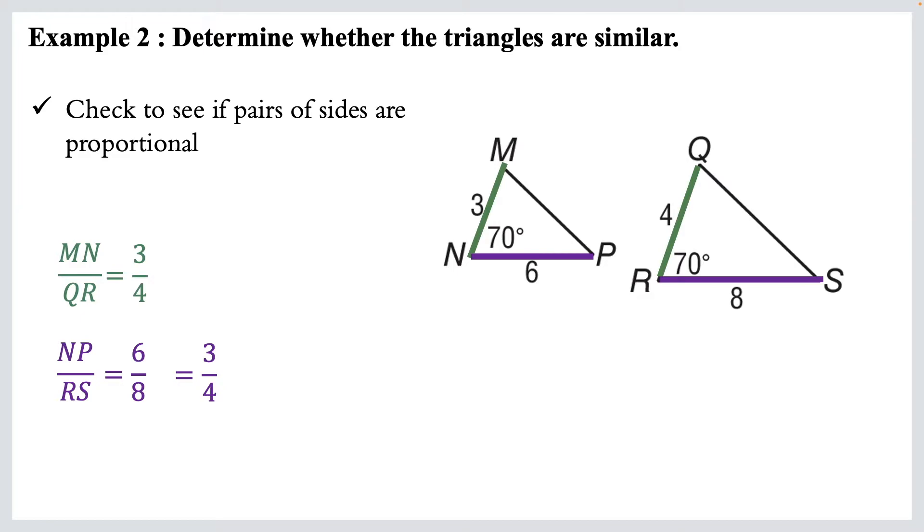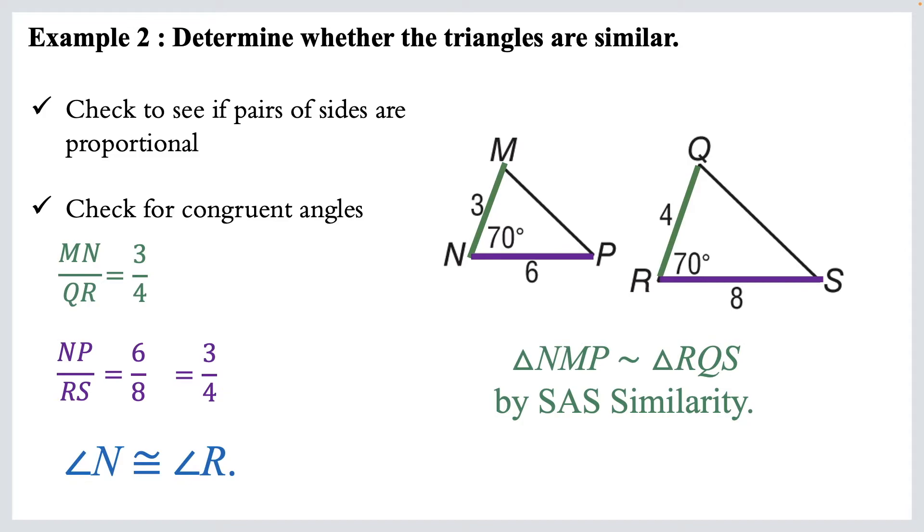So those are all the sides we know. We've got two sets of proportional sides. Now let's look at the angle included, or the angle between them. Alright, so angle N and angle R, they're congruent. They're both 70 degrees. So we do indeed have similar triangles. We've got triangle NMP is similar to triangle RQS because of the side-angle-side similarity. A lot like congruent triangles, but actually a little bit easier.